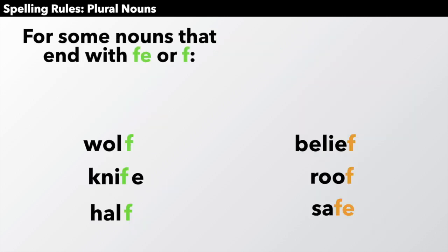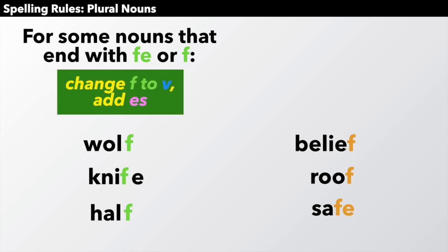For some nouns that end with FE or just F, we are going to change the F to V and then add es. For example, in a word like wolf, change the F to V, add es. Wolves.